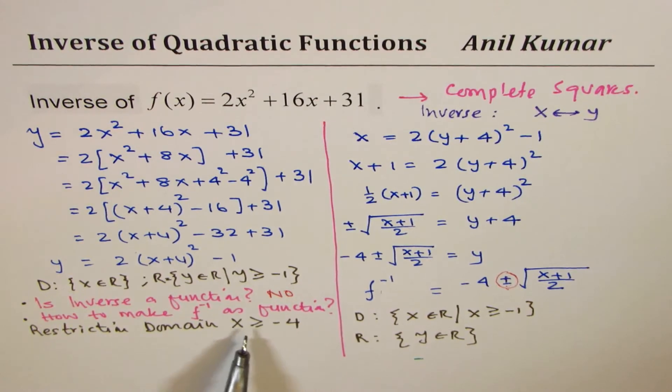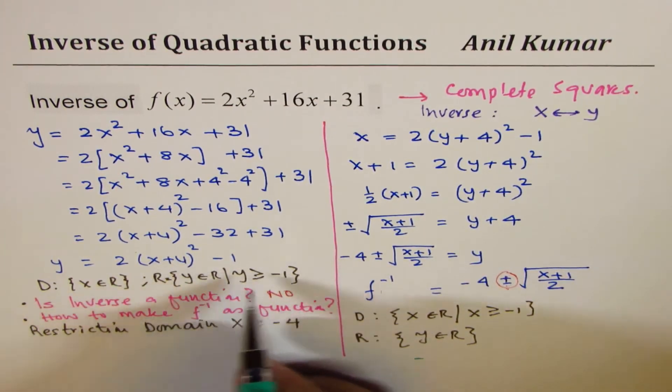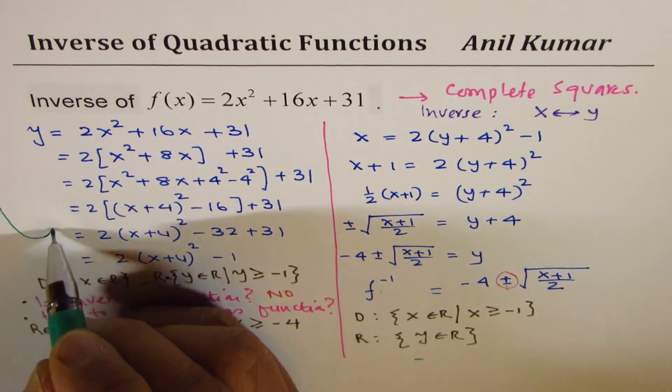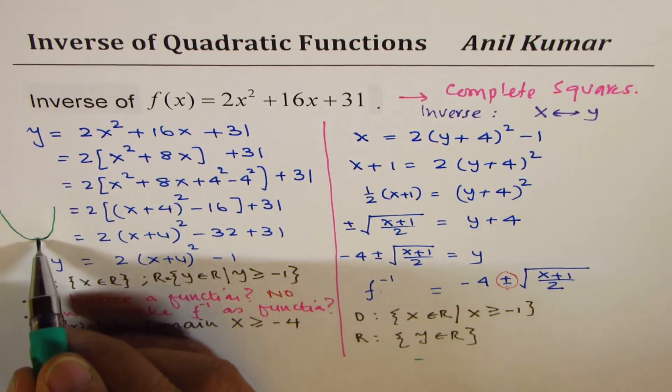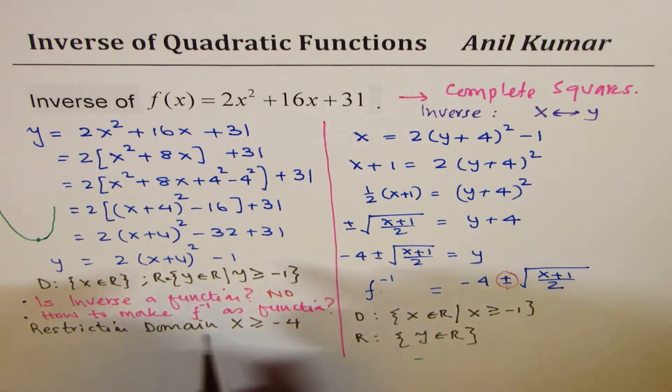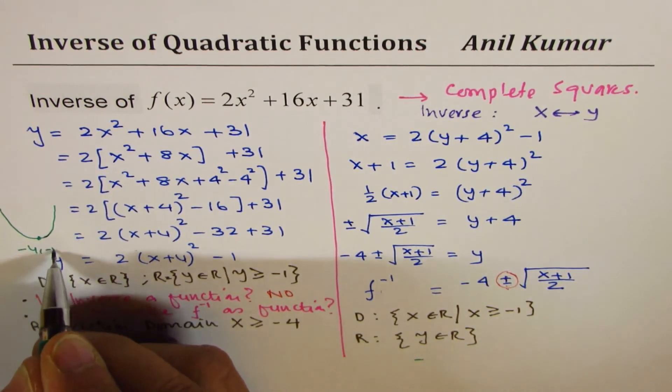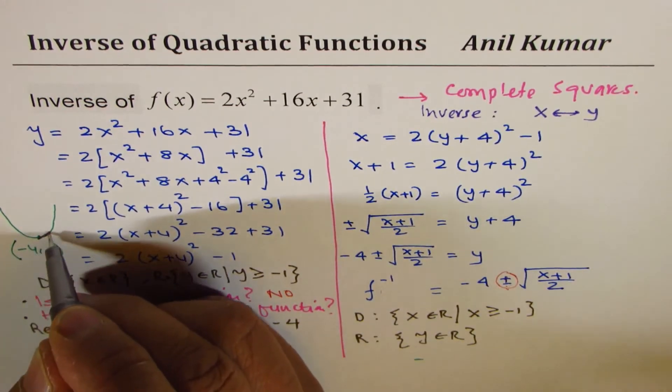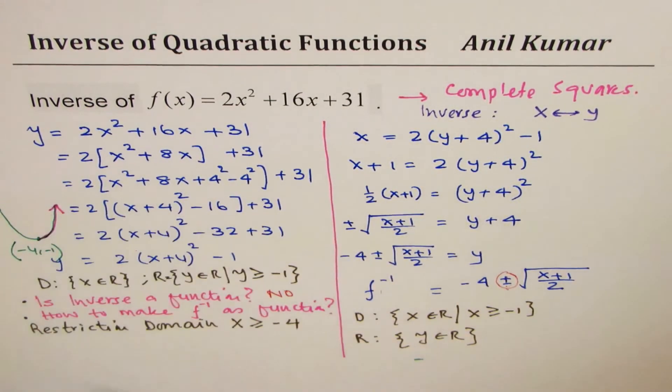So, if we restrict this domain greater than equal to minus 4, we are looking to one half of the parabola. So, in that case, actually speaking, the parabola here is kind of like this, with the vertex here at minus 4 minus 1. So, if I restrict to only greater than, we are looking into this portion of the parabola.